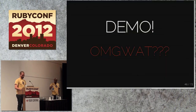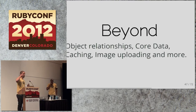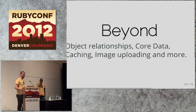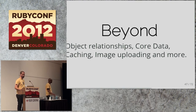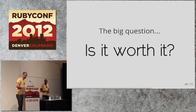We were going to show a demo but we're running low on time — a simple table view reading and writing — it'll be available later. RestKit can also do object relationships like 'Person has many Tasks,' full CRUD on those, Core Data, caching, image uploading, and more. It's a really powerful library.